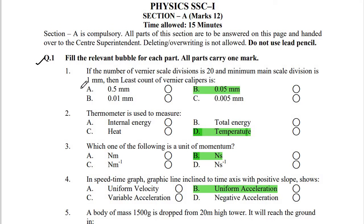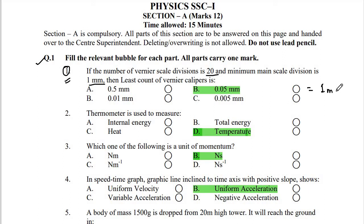Question 1: Fill in the relevant bubble for each part; all parts carry one mark. If the number of vernier scale divisions is 20 and the minimum scale division is 1 millimeter, the least count of the vernier caliper is: least count = minimum value of main scale ÷ total number of divisions on vernier scale = 1/20 = 0.05 mm. So option B is the correct answer.